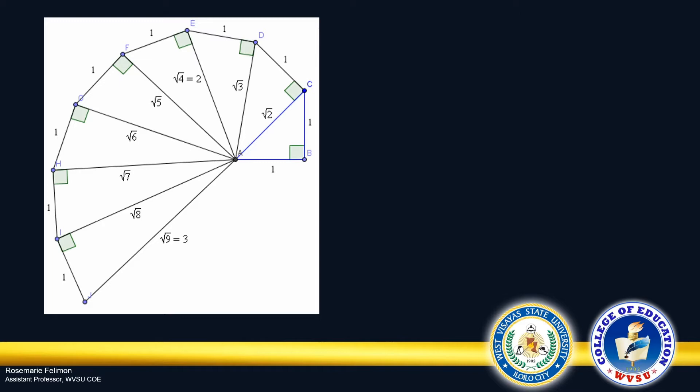This illustration shows the beauty of patterns in mathematics. It starts with an isosceles right triangle with each leg measuring one unit. And of course, its hypotenuse, if you compute using the Pythagorean theorem, you'll get square root of 2. And as we all know, square root of 2 is irrational.